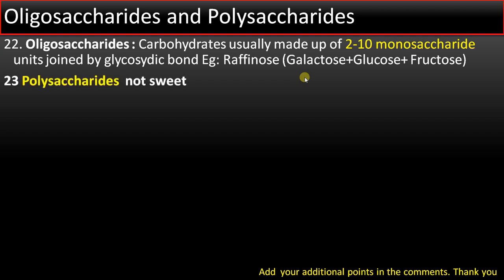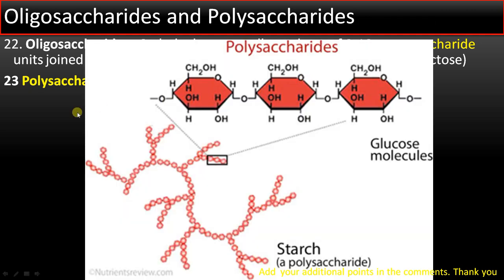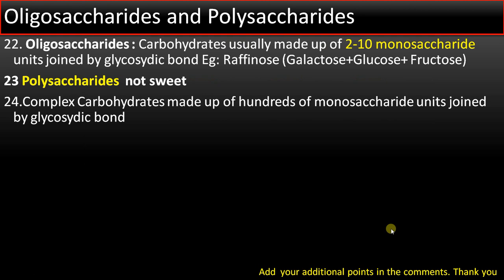Point number 23: polysaccharides are not sweet. They are made up of thousands of monosaccharide units joined by glycosidic bonds. For example, thousands of glucose molecules are joined by glycosidic bonds in starch. Polysaccharides are complex carbohydrates made up of hundreds of monosaccharide units joined by glycosidic bonds.